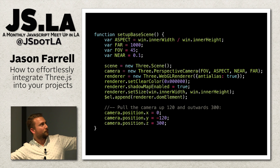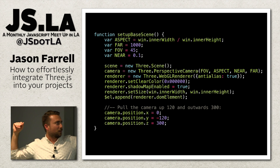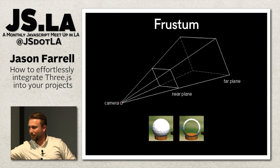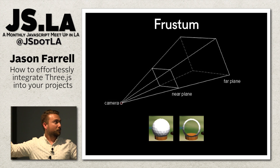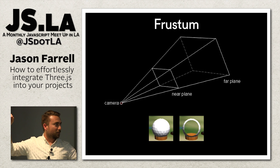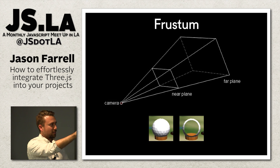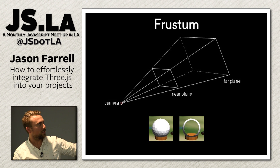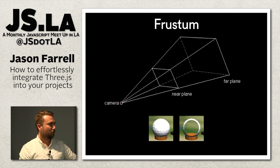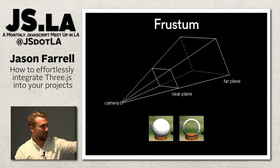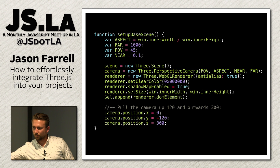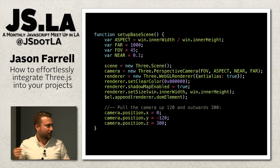There are these weird variables up here — aspect, far, and near. They define this thing called the frustum. What happens is you throw your objects into that back area; the near plane and the far plane — you want everything in your scene to be in there. If you put something too close to the camera, it's going to get cut off, like that golf ball right there. So back to Three.js.